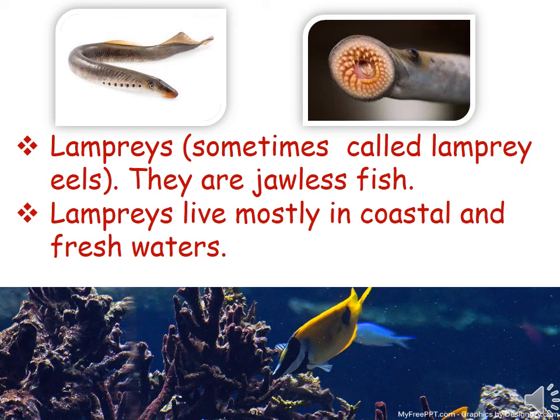Next we have the lampreys. Lampreys are also called eels because they somewhat look like eels, but they are very different from eels. Lampreys are a jawless fish — they don't have jaws. They live mostly in coastal and fresh waters.